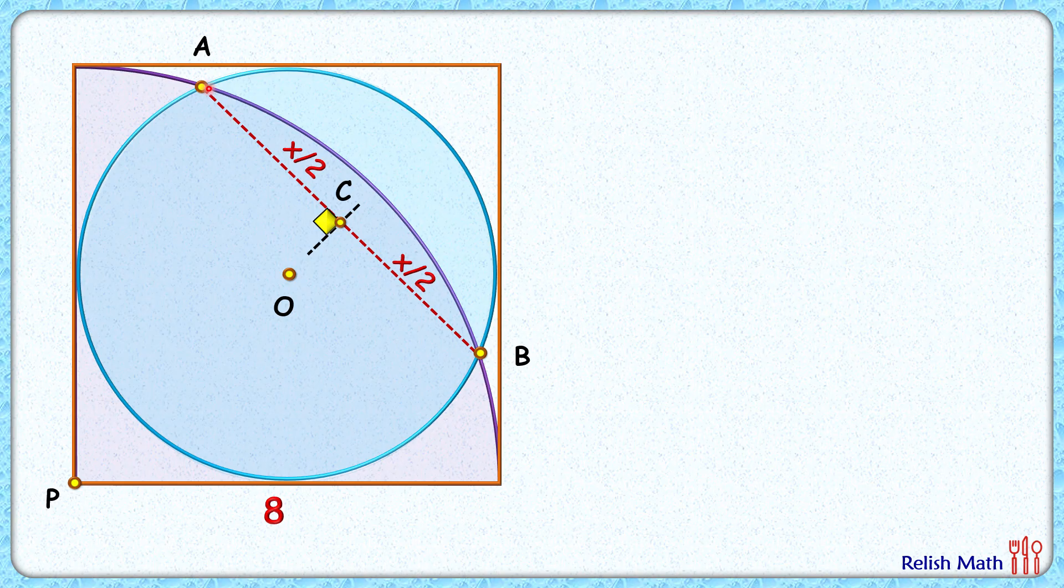Now AB is a chord in this blue circle and by theorem the perpendicular bisector of a chord passes through the center of circle. Also AB is a chord for this purple quadrant and the perpendicular bisector of this chord will pass through the center of this quadrant that is point P.